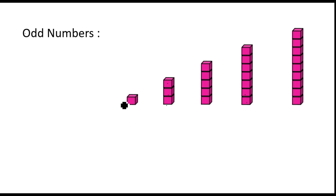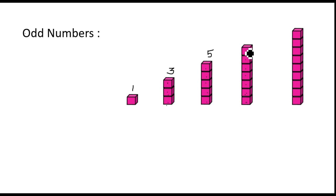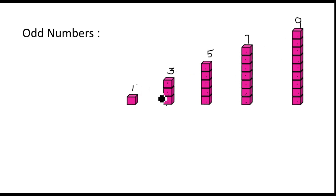Here, how many blocks are there? One block — so write one. Here: one, two, three — so three blocks are there. Here: one, two, three, four, five — five blocks are here. Here: one, two, three, four, five, six, seven — seven blocks. And here: one, two, three, four, five, six, seven, eight, nine — nine blocks. So the numbers one, three, five, seven, nine are odd numbers.